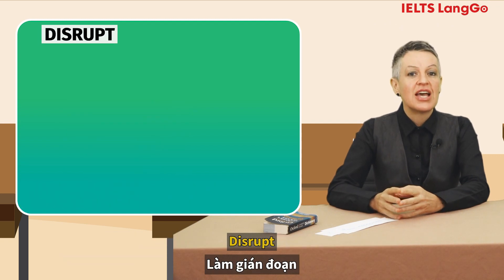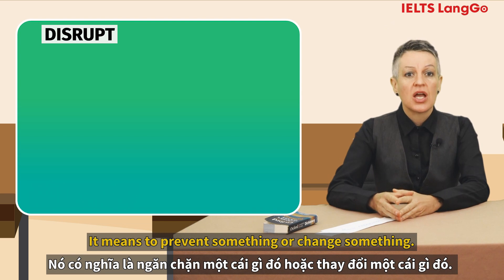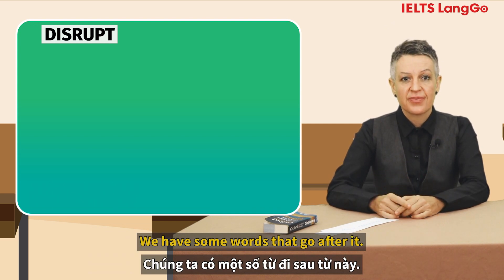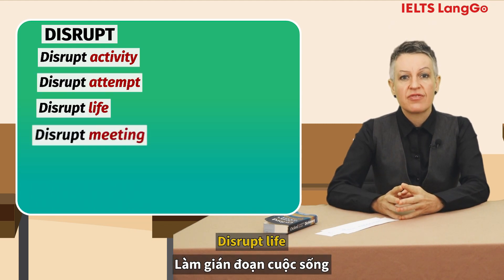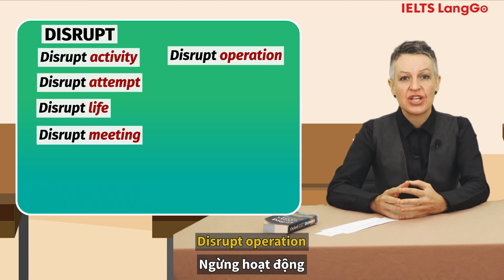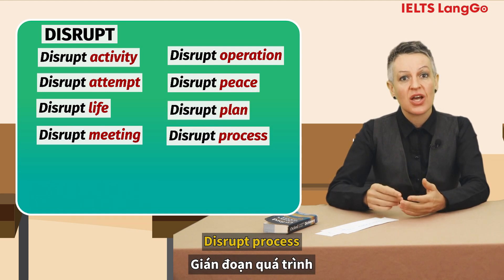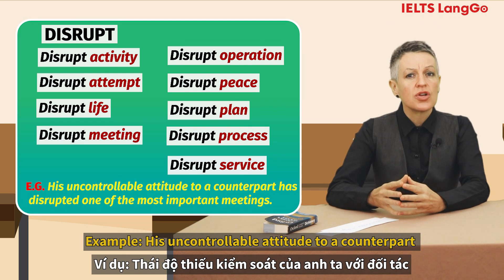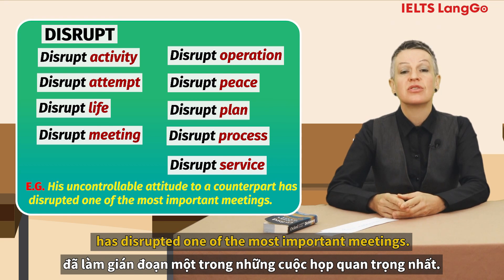'Disrupt' means to prevent something or change something. We have some words that go after it: activity, attempt, life, meeting, operation, piece, plan, process, or service. Example: his uncontrollable attitude toward a counterpart has disrupted one of the most important meetings.